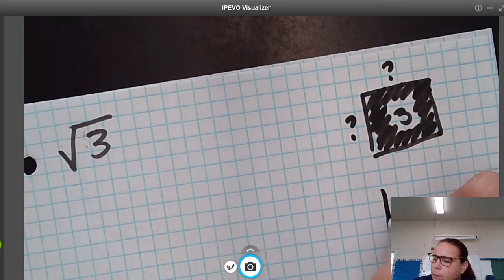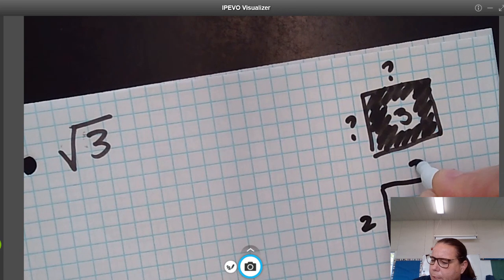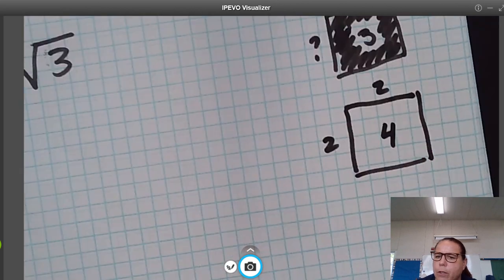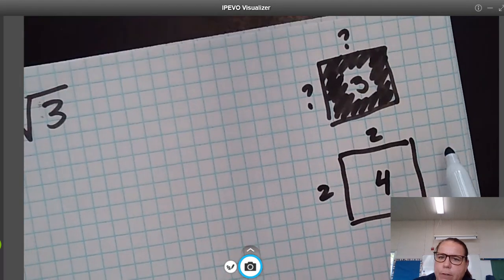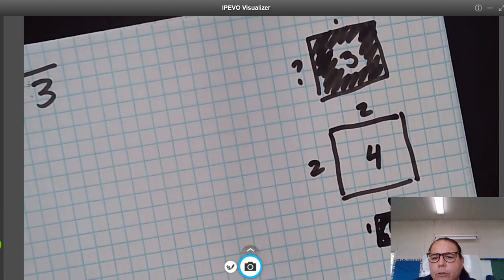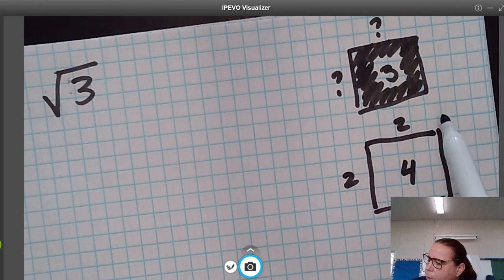Hopefully you guys are starting to get the idea that if it was a 2 by 2, this would be 4, so the square root of 4 is 2. If we had something that had an area of 1, each side would be 1 by 1. That's how a square works. So we need a 3, and something with the area of 3 is going to be between these two values.